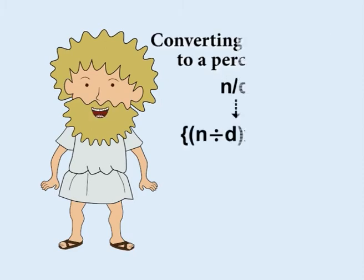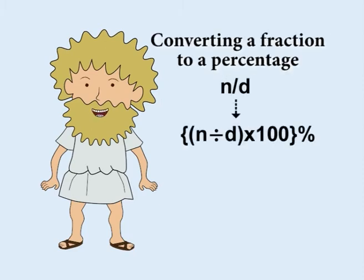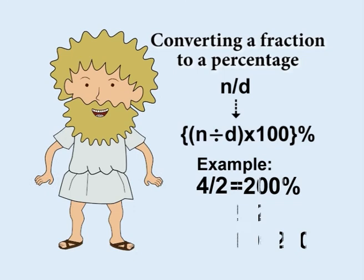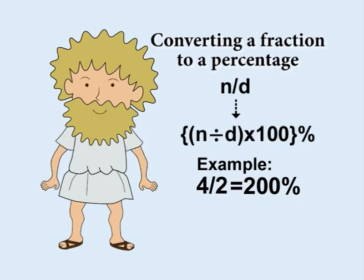To convert a fraction to a percentage, divide the numerator by the denominator and multiply the result by 100. For example, for the fraction 4 halves, 4 divided by 2 equals 2. 2 multiplied by 100 equals 200. So 4 halves is the same as 200%.